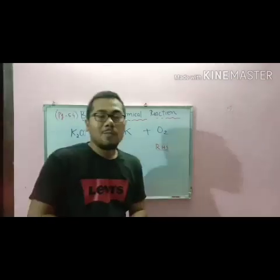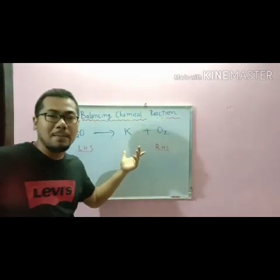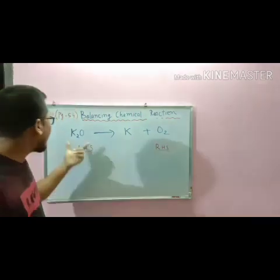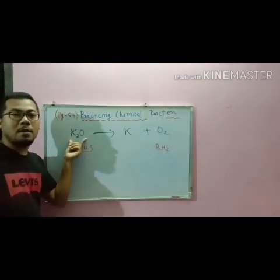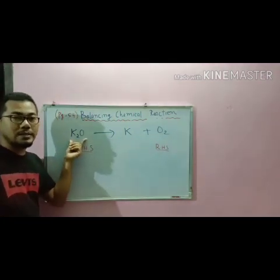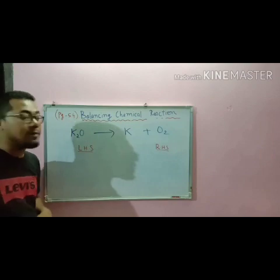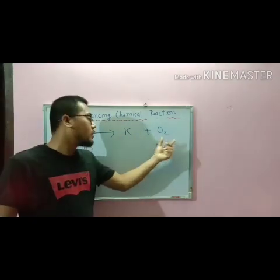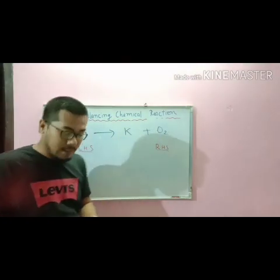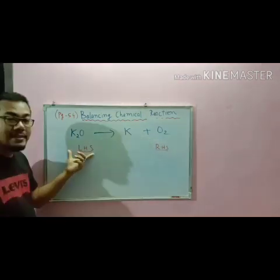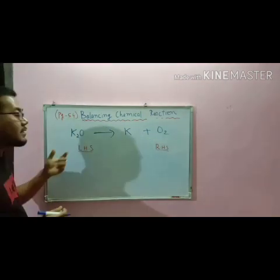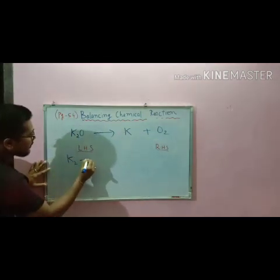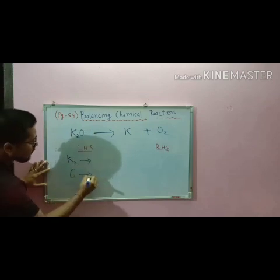We are almost done. This is the last chemical equation we will be balancing. Here, K₂O stands for potassium oxide, K stands for potassium, and O stands for oxygen. In the LHS side: K₂, that is potassium, and O, that is oxygen.